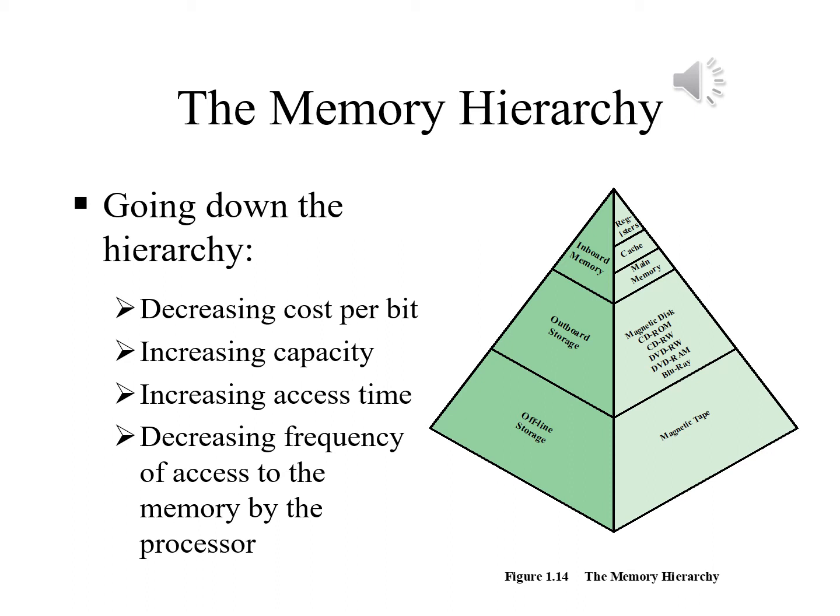We will examine this concept in greater detail later in this lecture when we discuss the cache, and when we discuss virtual memory later in the course. A brief explanation is provided at this point. Suppose that the processor has access to two levels of memory. Level 1 contains 1000 bytes and has an access time of 0.1 microseconds. Level 2 contains 100,000 bytes and has an access time of 1 microsecond. Assume that if a byte to be accessed is in level 1, then the processor accesses it directly. If it is in level 2, then the byte is first transferred to level 1 and then accessed by the processor. For simplicity, we ignore the time required for the processor to determine whether the byte is in level 1 or level 2.